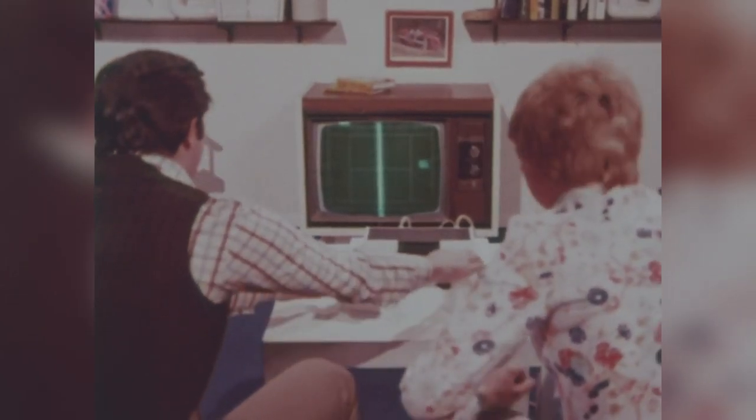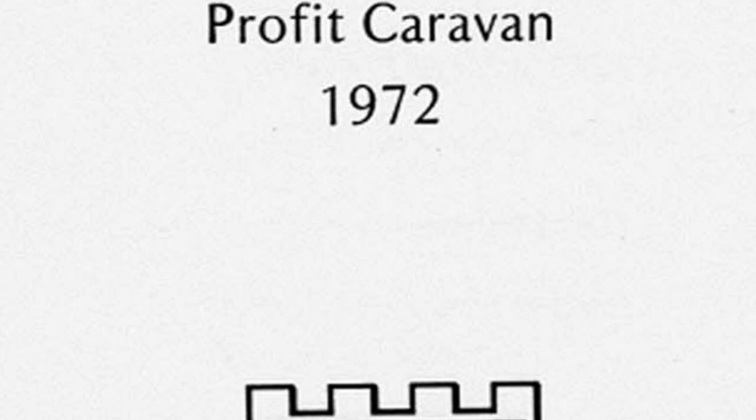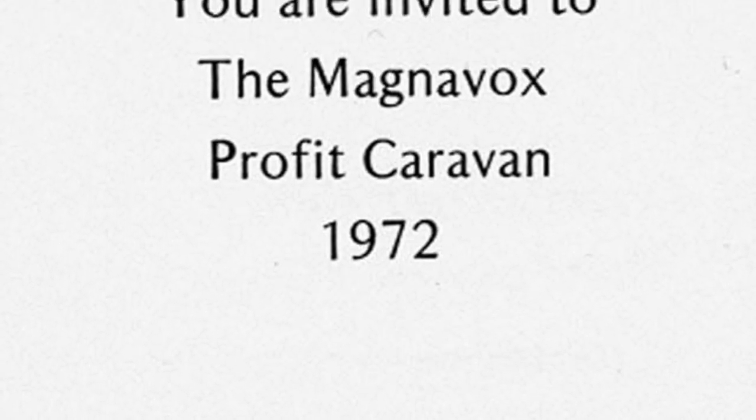This promotional film helped familiarize the public with the idea of a video game — something which plugged into the television set — which was a totally alien concept at the time. In addition, Magnavox initiated a nationwide tour for their dealers to get them to see the device. On May 24, 1972, the Magnavox Profit Caravan arrived in Burlingame, California, with a public demonstration held at the Airport Marina Hotel.